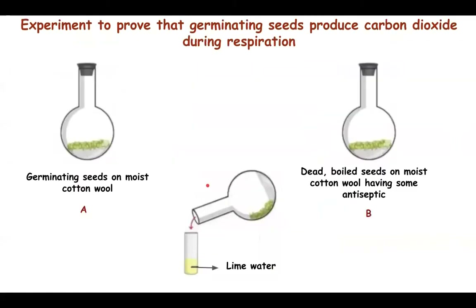The next experiment is to prove that germinating seeds produce carbon dioxide during respiration, and not dead boiled seeds. We have two round-bottomed flasks. In flask A, we have germinating seeds on moist cotton wool, stoppered. In flask B, we have dead boiled seeds placed on moist cotton wool with some antiseptic. The antiseptic is used to prevent microbial growth, which would interfere with our experimental result.